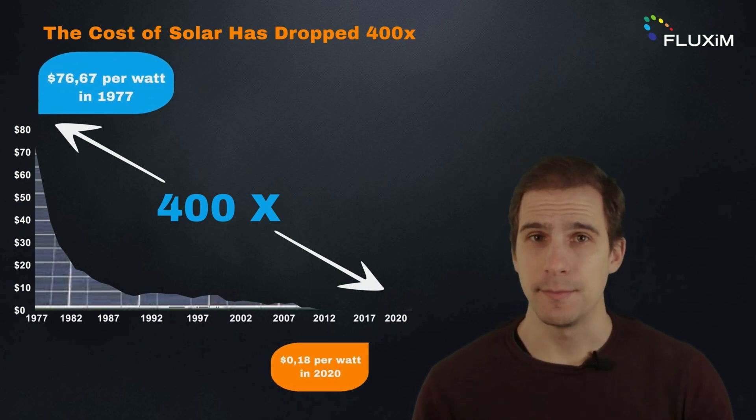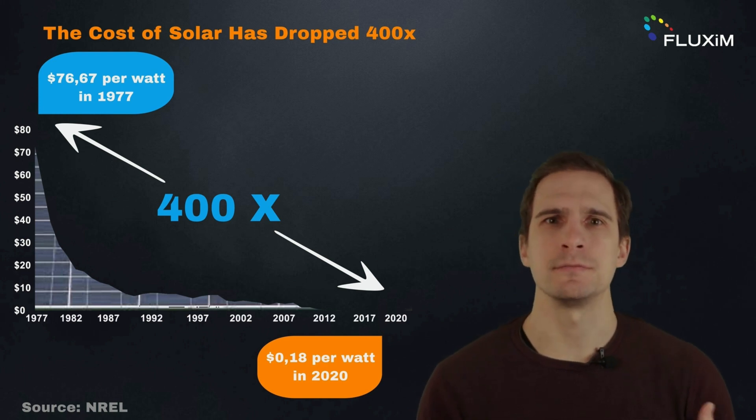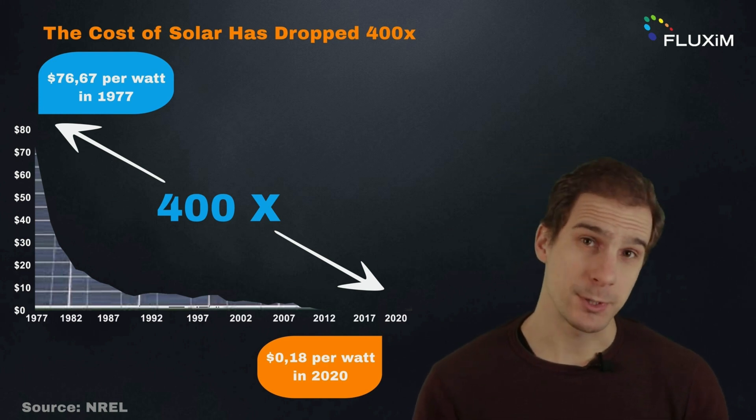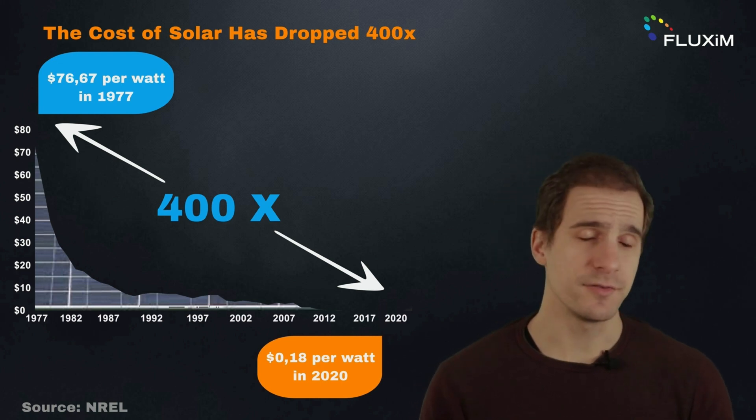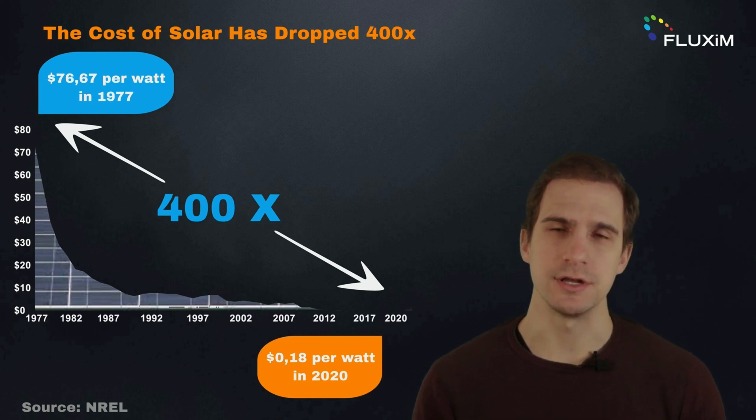However, the balance of system components like wiring, inverters, and mounting units tend to increase with the size of PV modules, making up about 55% of the total cost. So we need to increase the efficiency of the solar cell in order to push down the cost of solar energy.